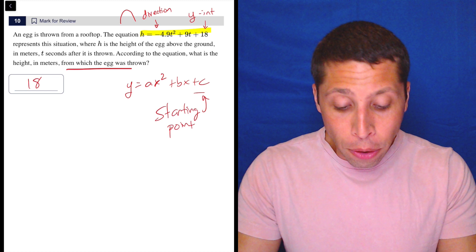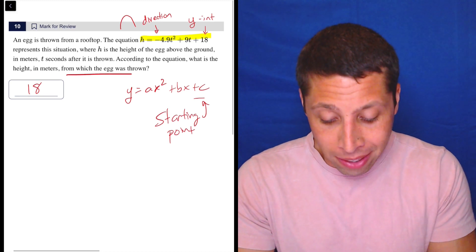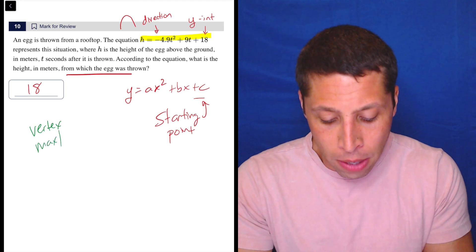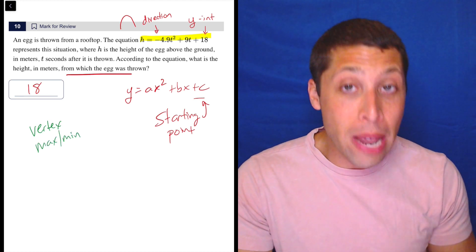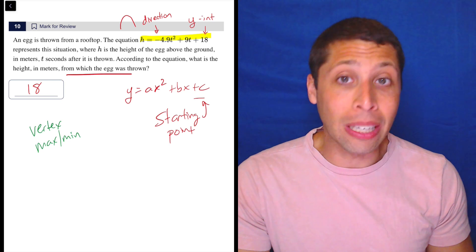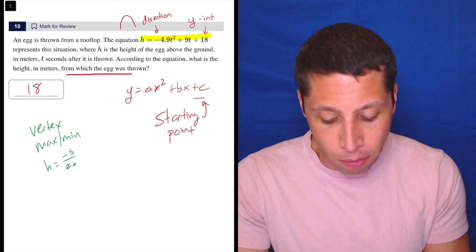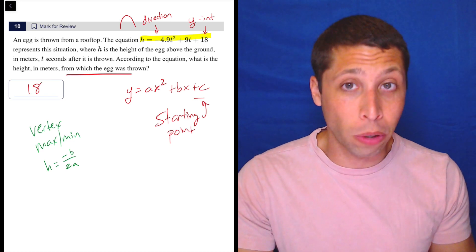Now, there are other things that they could have asked for. They could have asked for basically the vertex. The vertex would be the maximum or, in certain cases, maybe the minimum of the parabola. There are ways that we can find that using this equation.